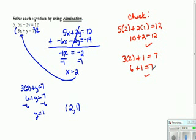So my system is going to be 5x plus 2y equals 12, and 3 times negative 2 is negative 6x. Negative 2 times y is negative 2y, and 7 times negative 2 is negative 14.